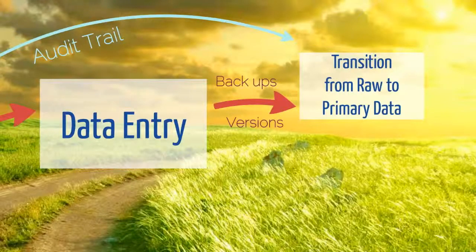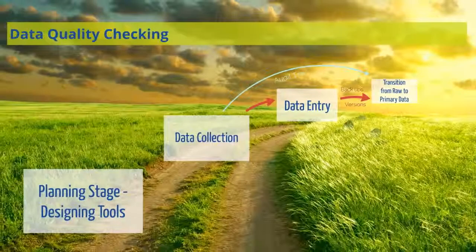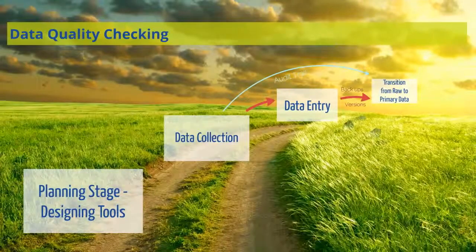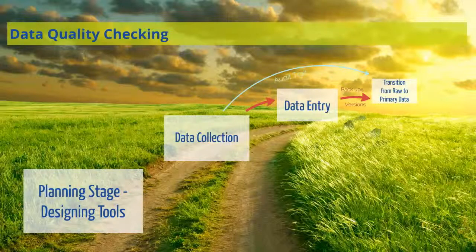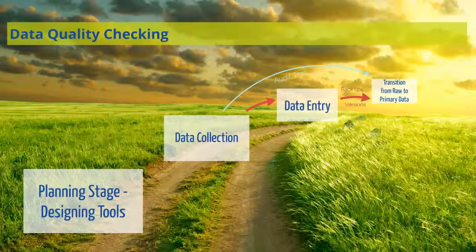During an activity, you are going to have several versions of the data: the raw data, the primary data, and the several data sets in between these two stages. It is imperative that you keep track of these versions and record the changes made from one version to the next in an audit trail document.